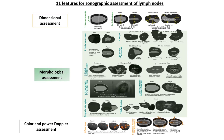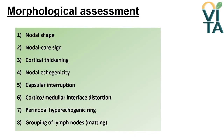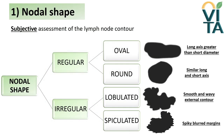Lymph nodes can be evaluated also by morphological assessment considering 8 parameters. Nodal shape is a subjective assessment of the lymph node contour. It can be regular — either oval or round — or irregular, which can be lobulated or spiculated. Oval lymph nodes have a long axis greater than the short one, while they are similar in round nodes. Lobulated shape is defined by smooth and wavy external contour, while spiculated lymph nodes have spiky, blurred margins.